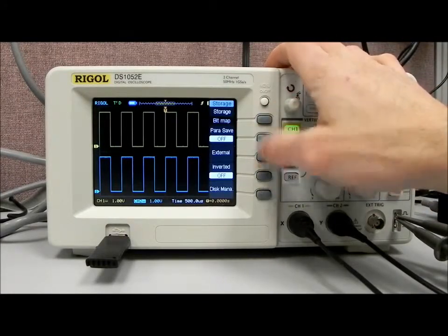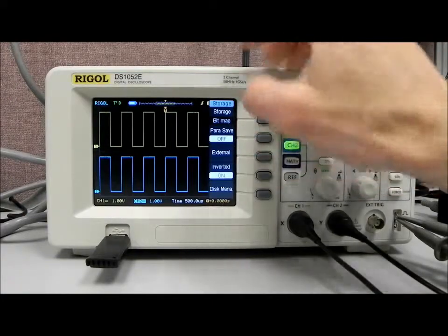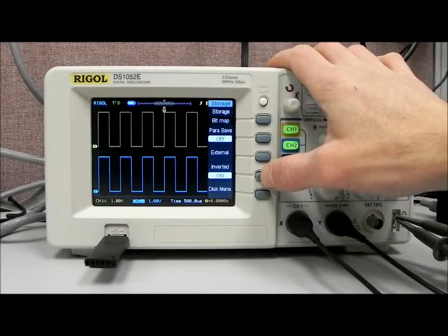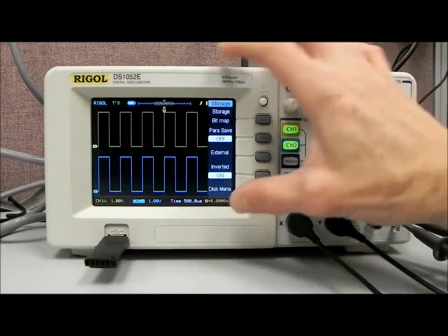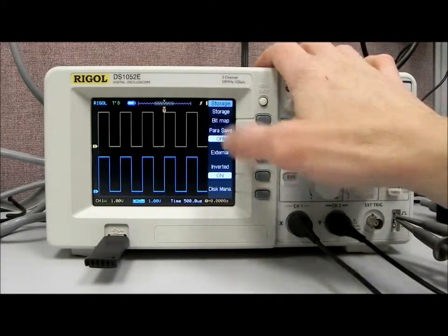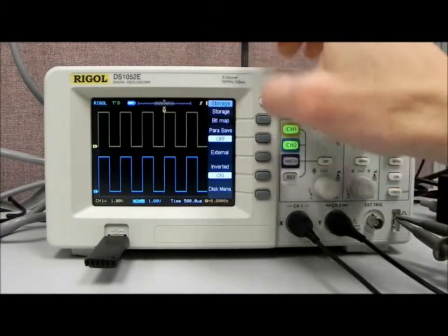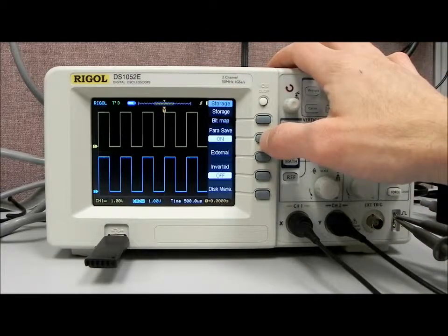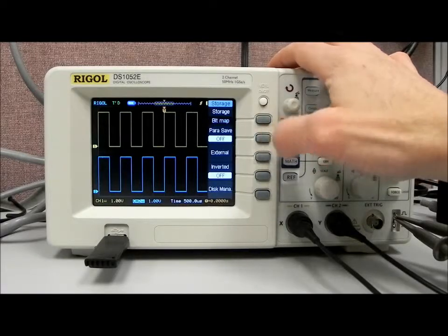So bitmap external. We also have inverted, because sometimes it's difficult to see the black background. We can then invert and it will change that black background to white. It also inverts the colors of the two waveforms or the two traces, and you can choose to save the parameters as a text file or not.